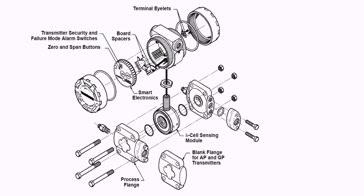This is the exploded view of the transmitter. There are two cover openings at both ends — one is for the glass view indication and the other is for the power and signal wiring. So one side you have a glass view for local indication, and the other side is a blind cover which has the power wiring.